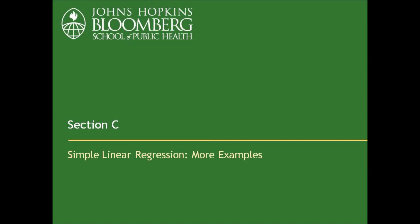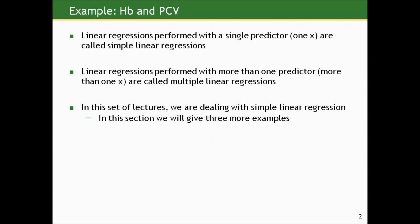In this section we'll take a look at some more examples of simple linear regression, applying the ideas from the last lecture section to a few more data examples. Sometimes linear regression performed with a single predictor — one X — is called simple linear regression. I've never liked that terminology; it implies these things should be easier than other types, which isn't necessarily the case. But when you hear simple linear regression, it just means there's one predictor X.